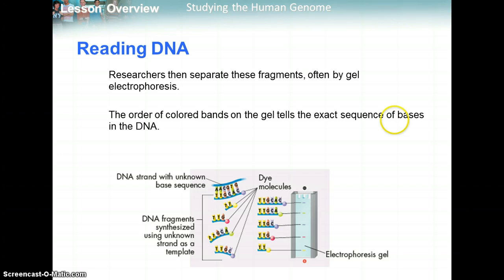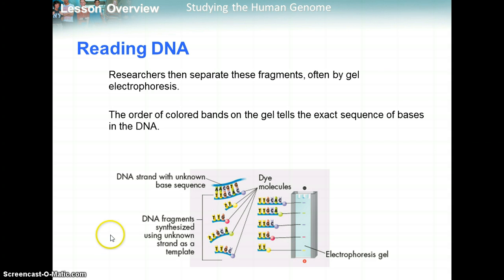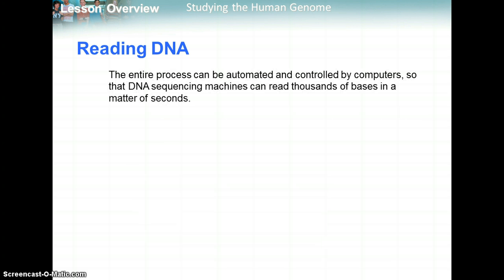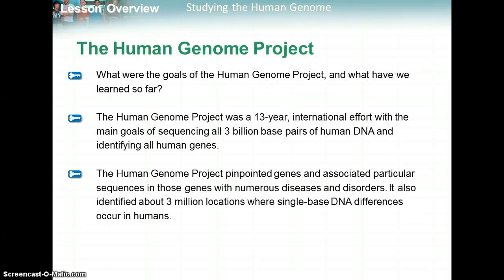Researchers separate these fragments by electrophoresis. The order of the color bands on the gel tells the exact sequence of bases in the unknown DNA being researched. The entire process can be automated and controlled by computers, and DNA sequencing machines can read thousands of bases in a matter of seconds.